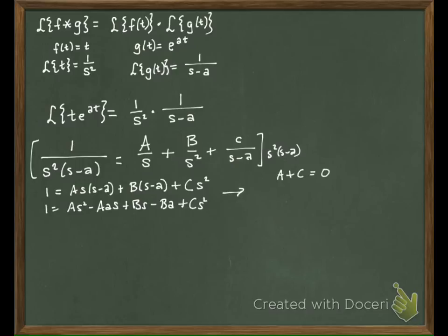Okay, with S, we have a negative A times little a, and then we have a B, right? Is there an S on the other side? No, so that's zero also. And then we just have a negative B A here.